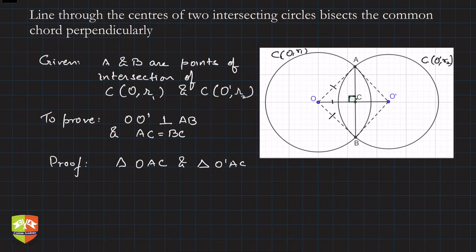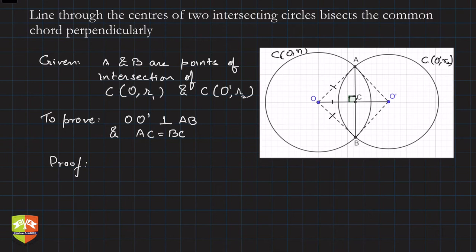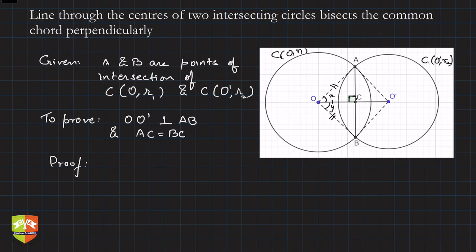Let's start the proof. We know that AC equal to BC can be proven if AC and BC are corresponding parts of two congruent triangles. If we look closely, triangles OAC and OBC are the two triangles — if we prove them congruent, AC will automatically equal BC. For that we need more information: OA equals OB because they are radii, and OC is a common side. If we somehow prove that angle X equals angle Y, the job is done.